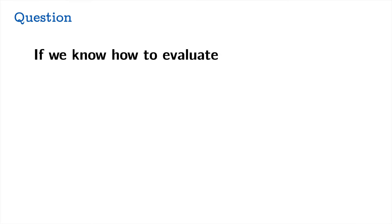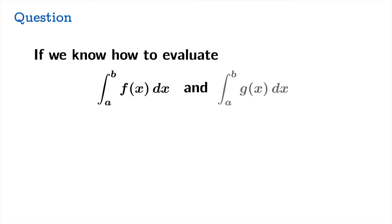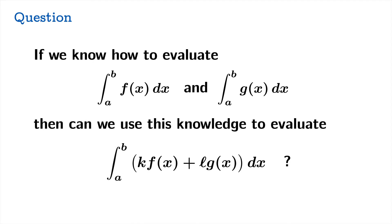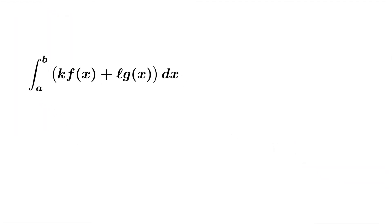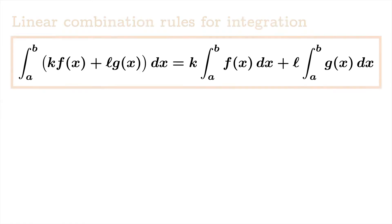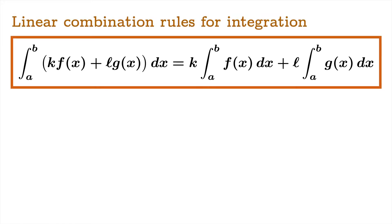So if we know how to evaluate the definite integral of f and the definite integral of g on the same interval from a to b, then can we use this knowledge to evaluate the integral of a linear combination of f and g? And the answer is a resounding yes. The integral of the linear combination is the corresponding linear combination of integrals. We'll think of this as the linear combination rules for integration.